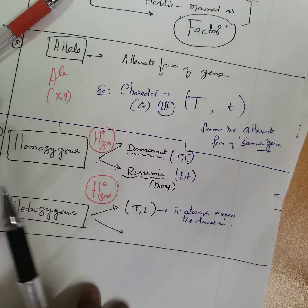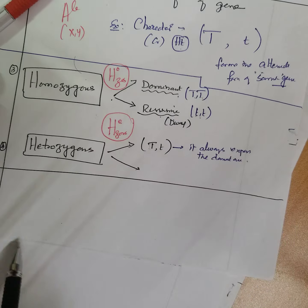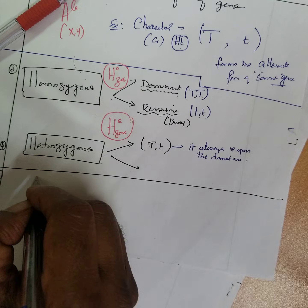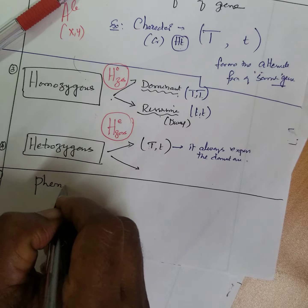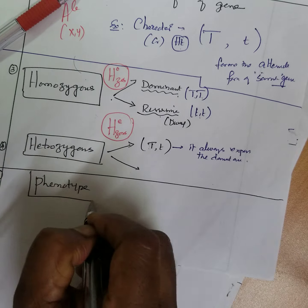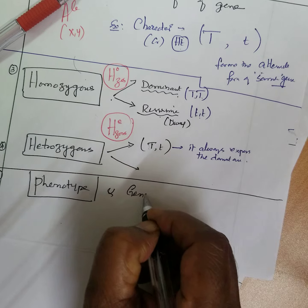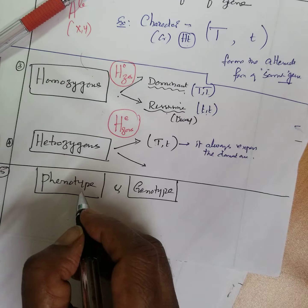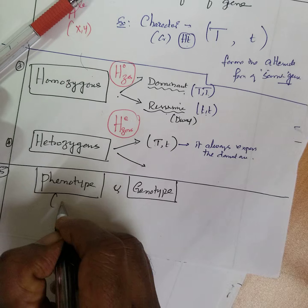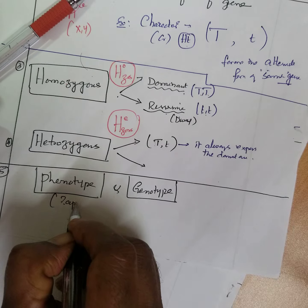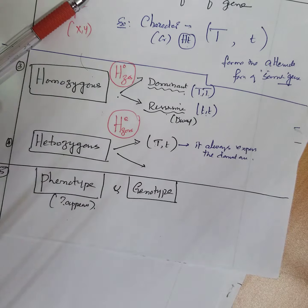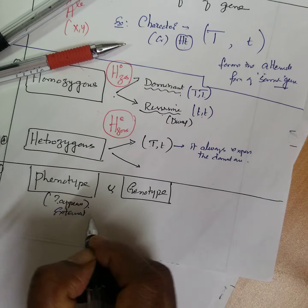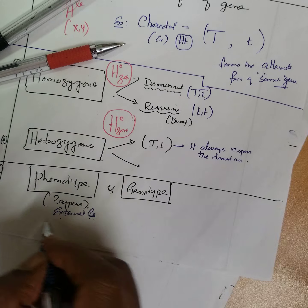What is phenotype and genotype? Phenotype is an expression - what it appears like. This is an external character, the morphological characters.